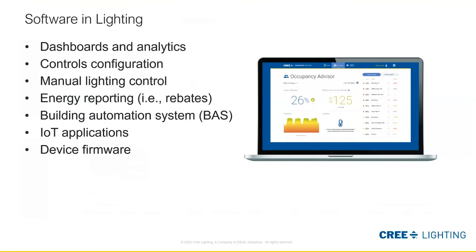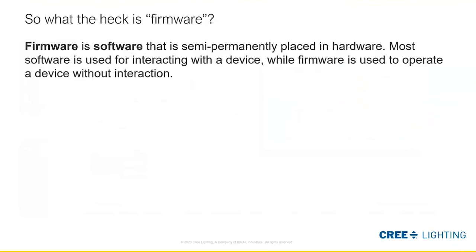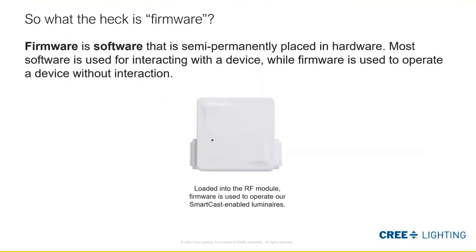That connects into building automation systems — a topic we'll explore more next week. There are also some really advanced applications with the Internet of Things, or IoT. You've probably also heard of firmware — that's a specific type of software. Firmware is basically a type of software, but instead of something you interact with, it's semi-permanently installed on a device and allows that device to operate without any human interaction.